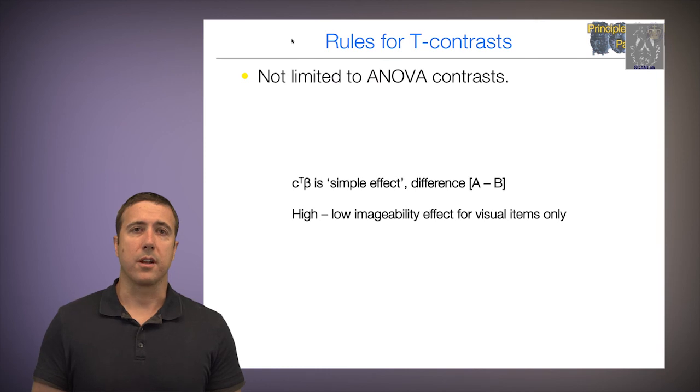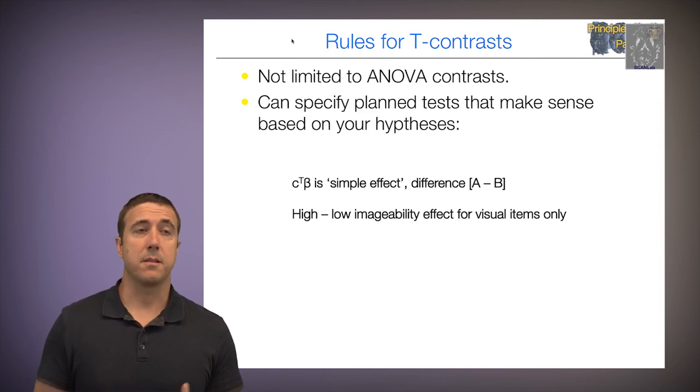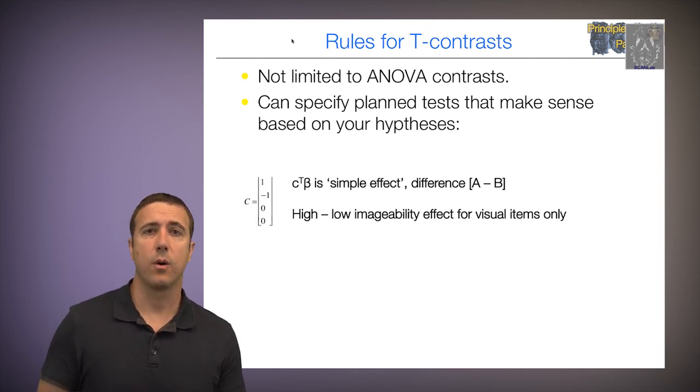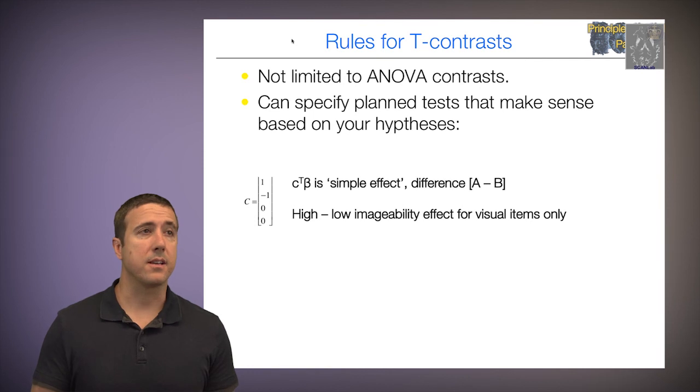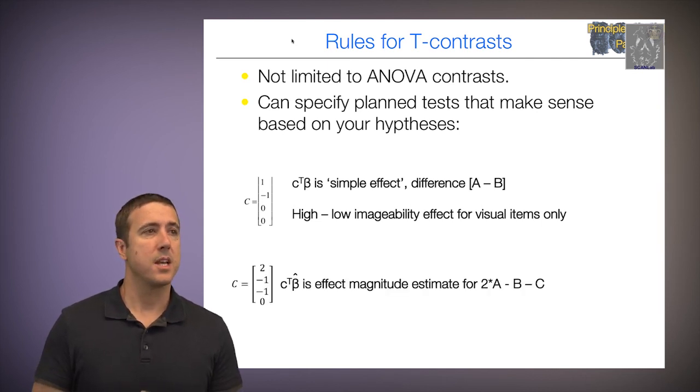I'm not limited to ANOVA contrasts. I can specify planned tests that make sense based on whatever hypotheses I might have. So in this case, the contrast 1, negative 1, 0, 0 is testing a simple effect, or the difference between A and B. This might be of interest. In this case, it's testing high versus low imageability effect for visual items only, which is a very sensible thing to test depending on my psychological questions. This contrast, negative 2, negative 1, negative 1, 0, tests something else. This tests the magnitude of twice A versus B and C together. So this may or may not make sense depending on my design, but this is a valid contrast. And in some cases, it might be useful.